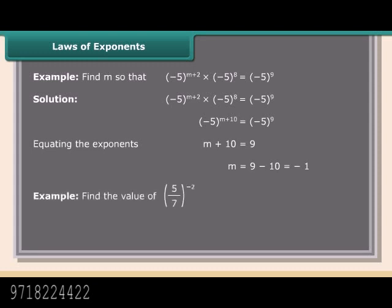Example: Find the value of 5 upon 7 raised to the power minus 2. Solution: 5 upon 7 raised to the power minus 2 equals 5 raised to the power minus 2 upon 7 raised to the power minus 2, which equals 7 raised to the power 2 upon 5 raised to the power 2, which equals 49 upon 25.